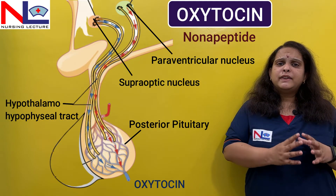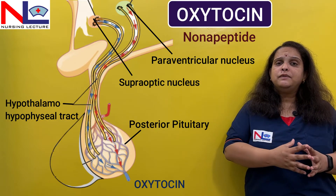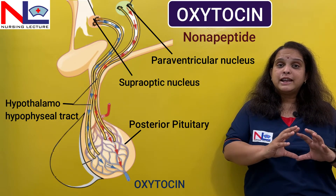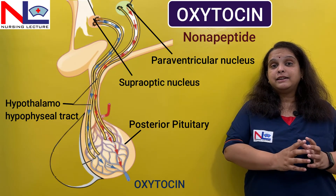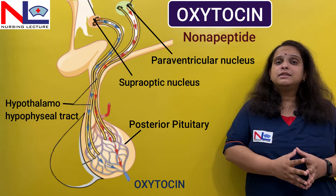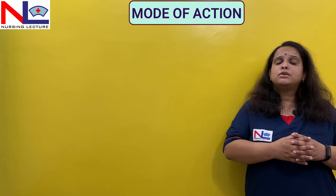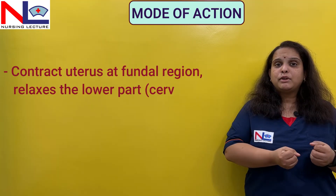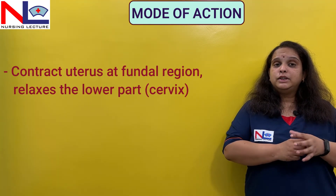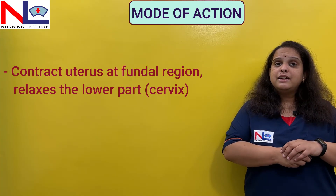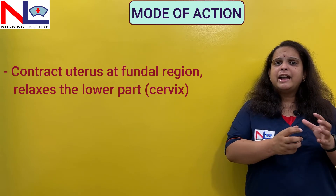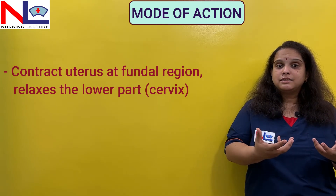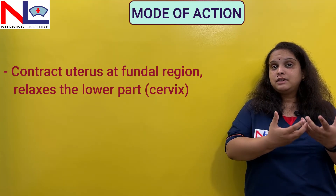This is a very important drug that we can also artificially infuse into the mother because it helps in the tonicity of the uterus — it contracts and helps in the labor process. Oxytocin mainly helps in uterine contraction because there are receptors on the uterus where it binds, especially contracting the fundal part while making the lower cervical region more relaxed, thereby allowing the product of conception to deliver out.